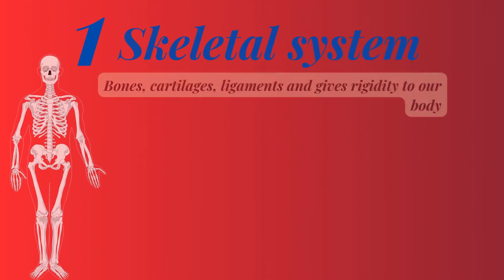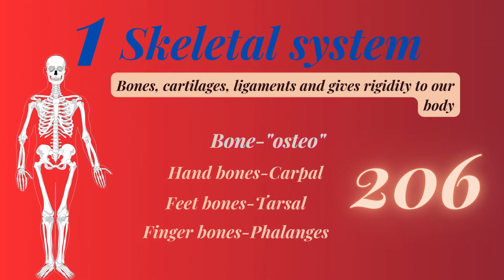Number one: the skeletal system. It includes bones, cartilages, and ligaments, and gives rigidity to our body. The medical term for bone is 'osteo'. Hand bones are called carpal, feet bones are tarsal, and finger bones are phalanges. We have 206 bones in adults; in children we have 270 bones, which fuse to form 206 bones.